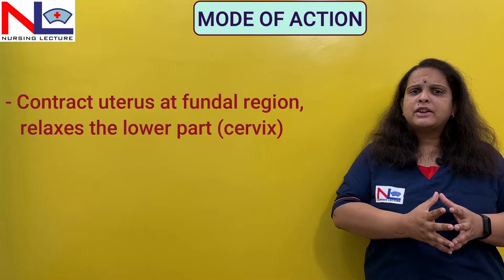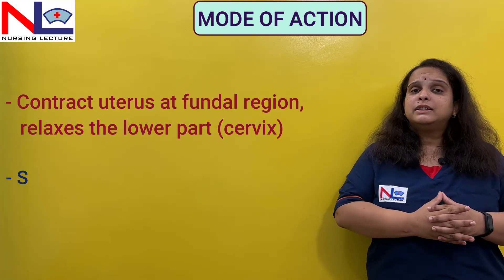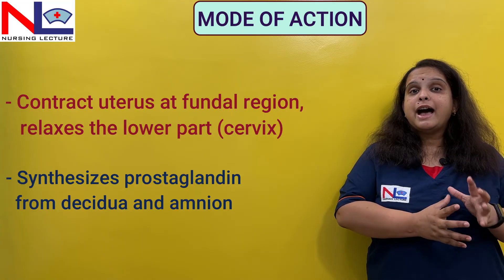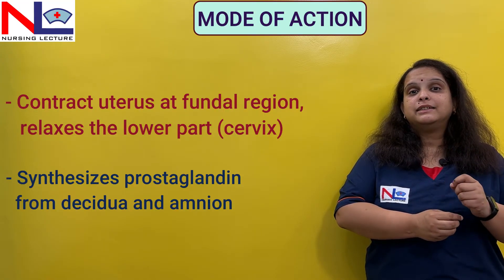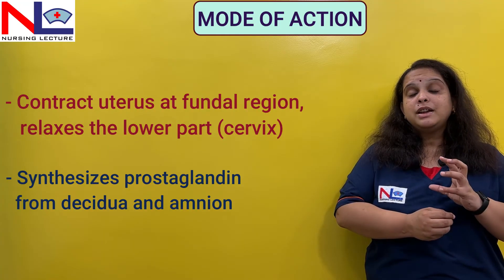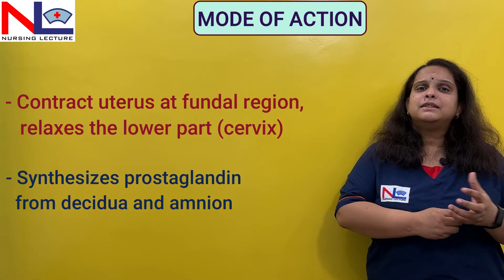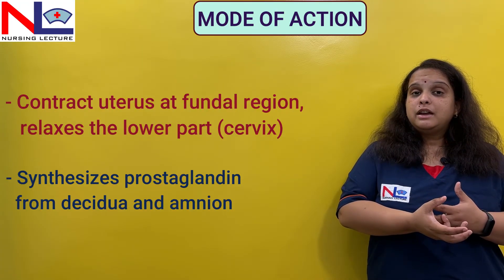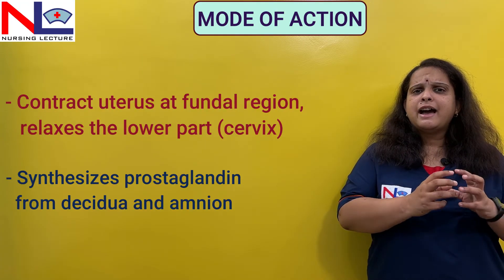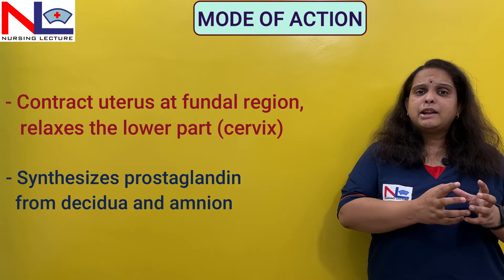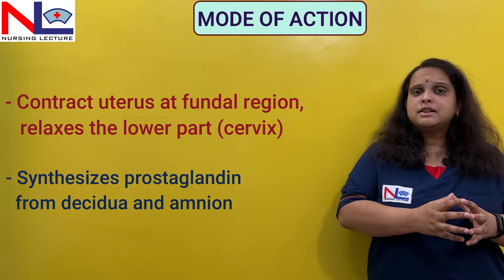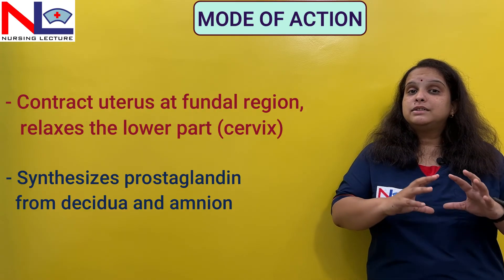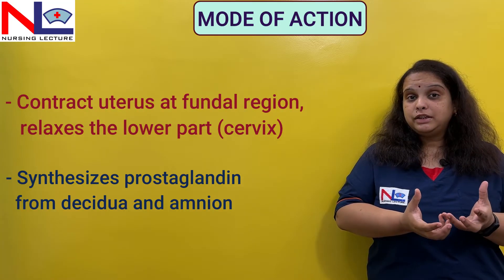Oxytocin also synthesizes prostaglandin from the amnion and the decidua — the fetal membrane and the endometrium of the uterus. This helps in uterine contractility and cervical ripening, thereby allowing the labor to progress and the fetus to deliver out. So the main function of oxytocin is the contraction of the uterus.